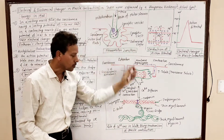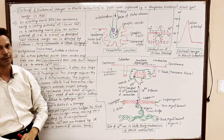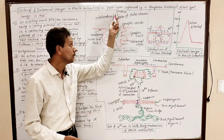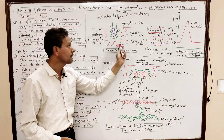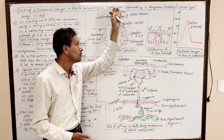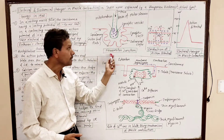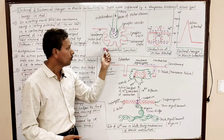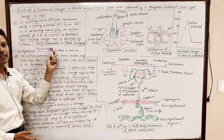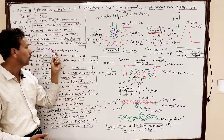This is all about electrical and biochemical changes in muscle contraction. To summarize: the diagram of the neuromotor junction involves the terminal part of the motor neuron and the motor end plate — the part of the sarcolemma lying beneath the motor neuron. In the synaptic cleft, cholinesterase converts acetylcholine into acetate plus choline, and these products re-enter the terminal knobs to re-synthesize neurotransmitters.